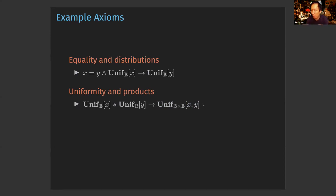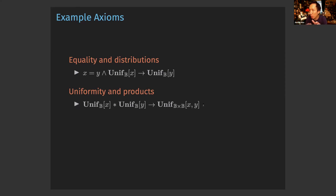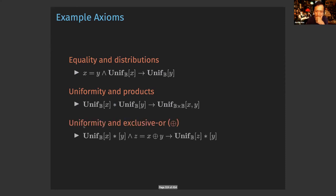Along with the definitions, we can give some axioms about these assertions. For instance, one says that if x equals y and x is uniform, then y is also uniform. Another interesting one involves uniformity and products: if x and y are uniform and connected by star, then the pair (x, y) is uniform over pairs of Booleans. This crucially relies on the star connective — it's really important that x and y are independent. If x is always equal to y, you won't get all four possible values — true-true, true-false, false-true, false-false.